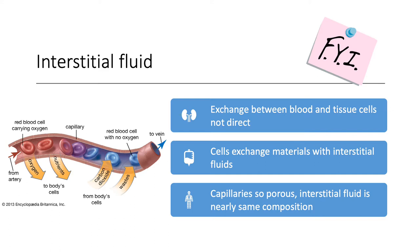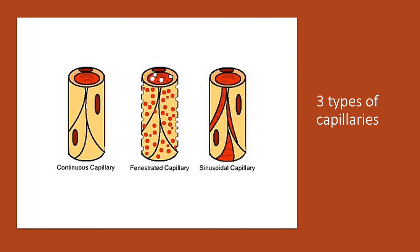As a brief FYI, remember that the exchange between the blood and the tissue cells is not direct. There's an intermediary — the ISF, the interstitial fluid. Cells exchange materials with the interstitial fluid before they can move into the tissue cells. However, because the capillaries are so porous, the ISF is nearly the same composition as blood, so we often disregard the ISF when discussing these exchanges, though we should remember it is an intermediary step.